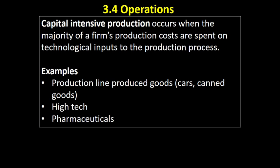Capital intensive production occurs where the majority of the firm's production costs are spent on technological inputs to the production process — we're talking about production lines here. Factories with a highly automated production line producing cars, canned goods, high-tech products such as computers and laptops tend to be fairly capital intensive, as do pharmaceuticals and similar industries.